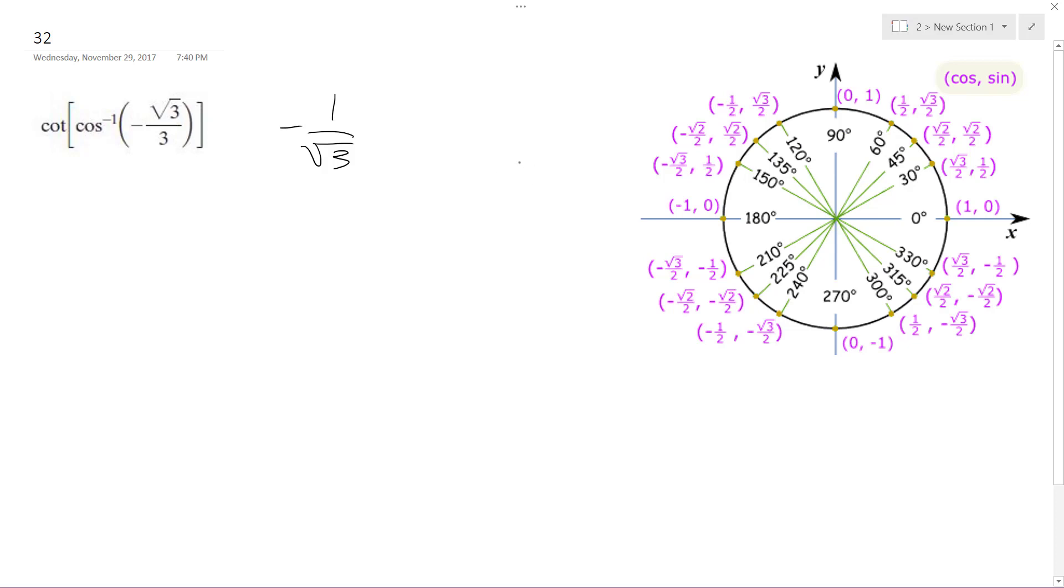So cosine's bound between zero and pi, so in this case it would be negative one. And this would be root three, so this would be two root two.